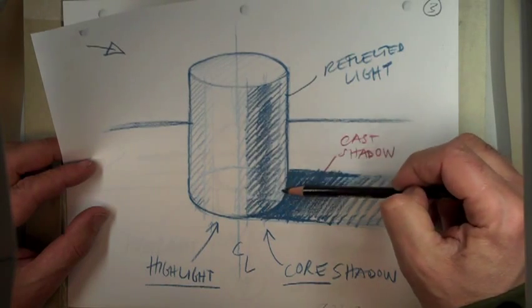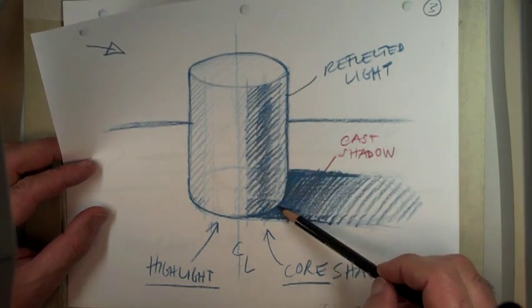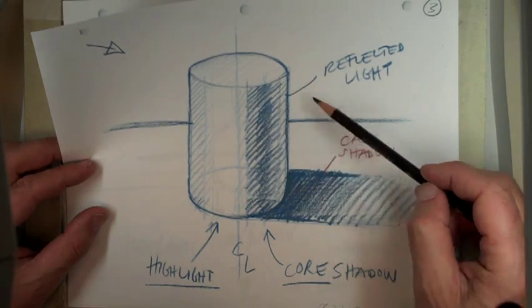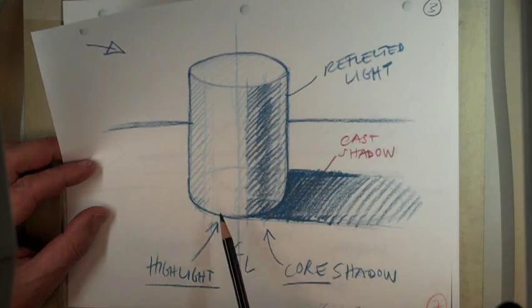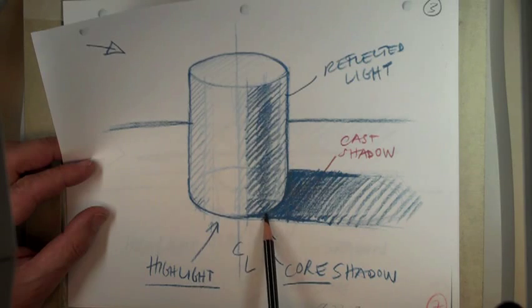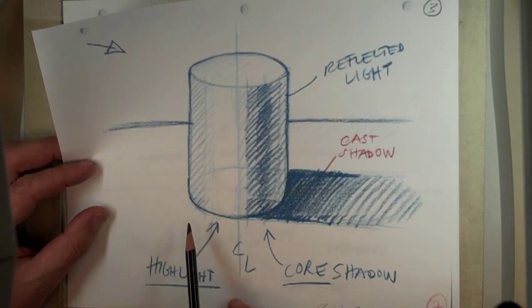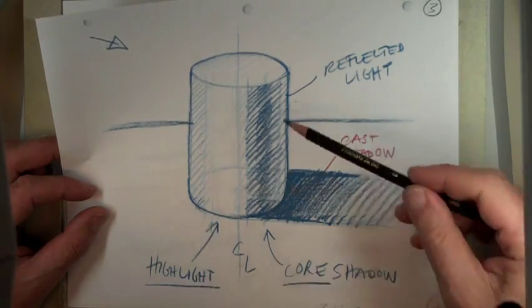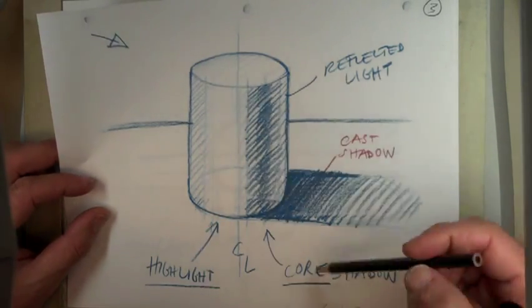And then you have a thing called reflected light, which is kind of this border area between the object, the outside, and the core shadow. And what it does is it offsets the object from, in this case, a cast shadow and also from the background. The highlight is opposite your core shadow, well actually it's not quite opposite, I'll show in a moment where exactly, but there is a little bit of shadow on the other side as well.